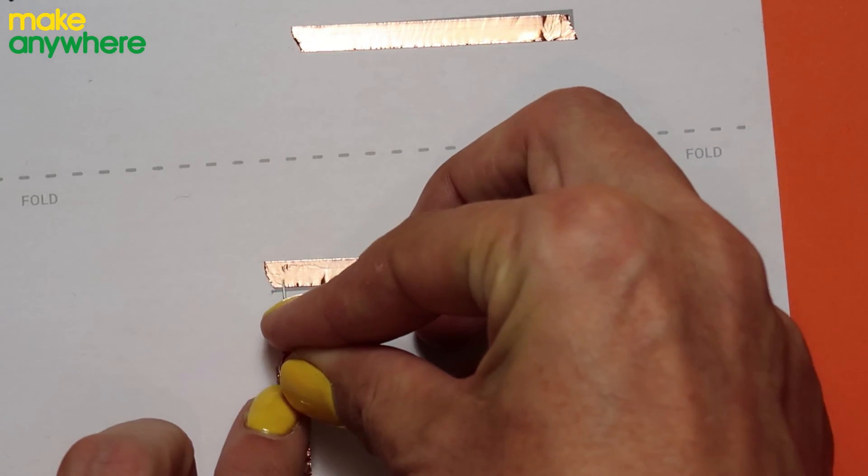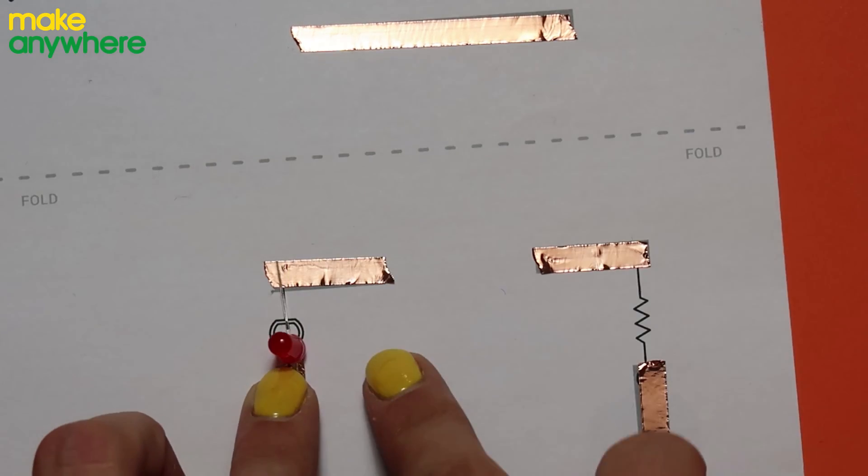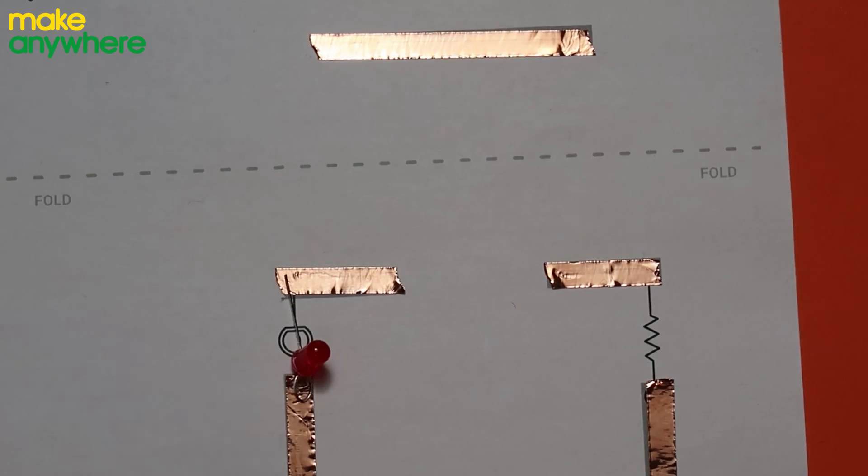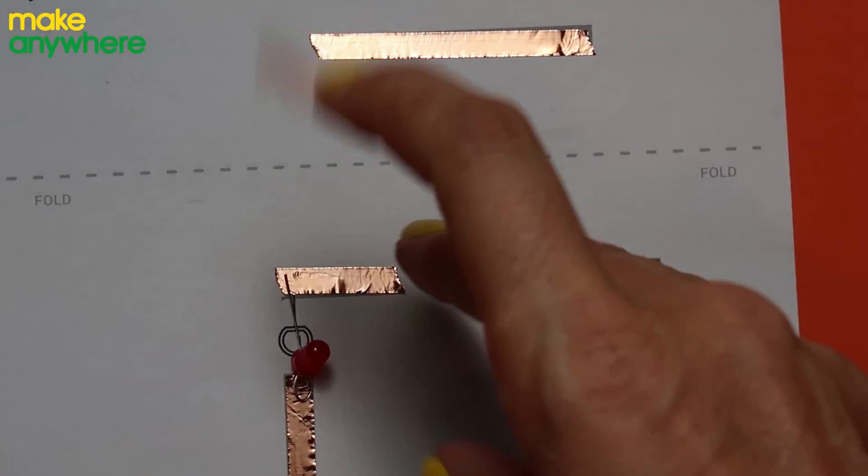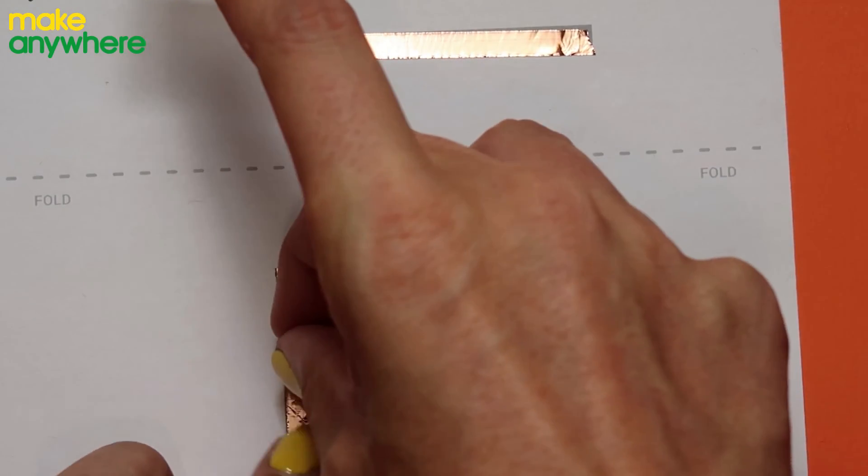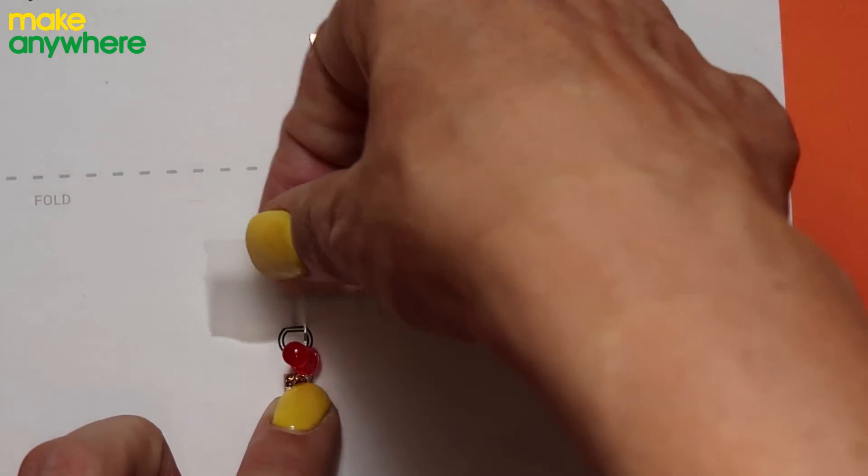Remember our positive side or our circle is going to go down and our negative up the top. Make sure that the middle legs are touching the copper tape so that the power can run through the legs and then light up.